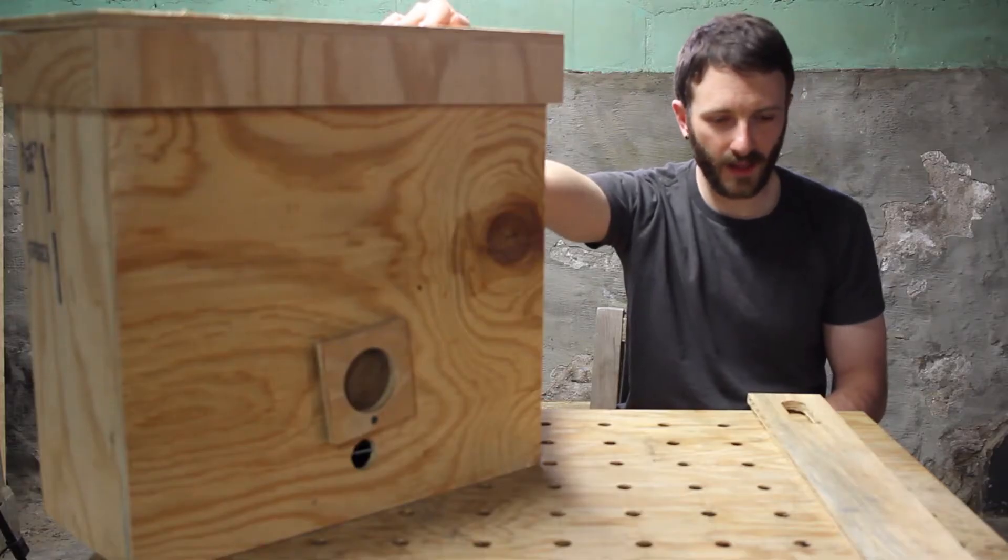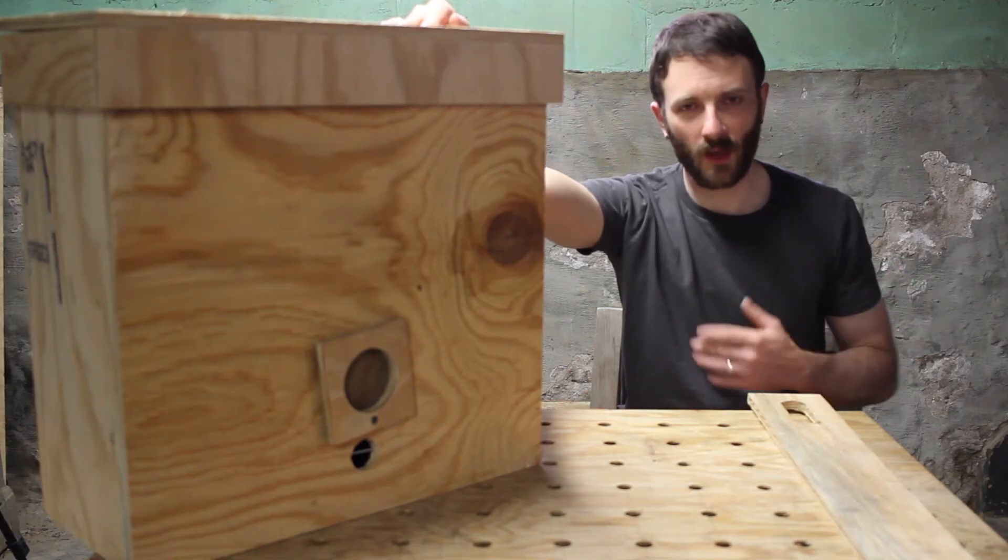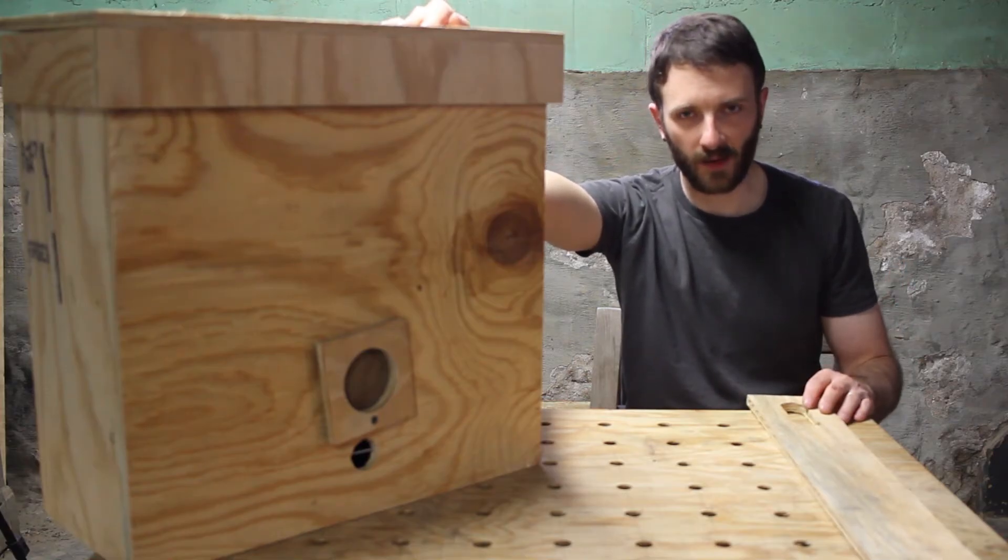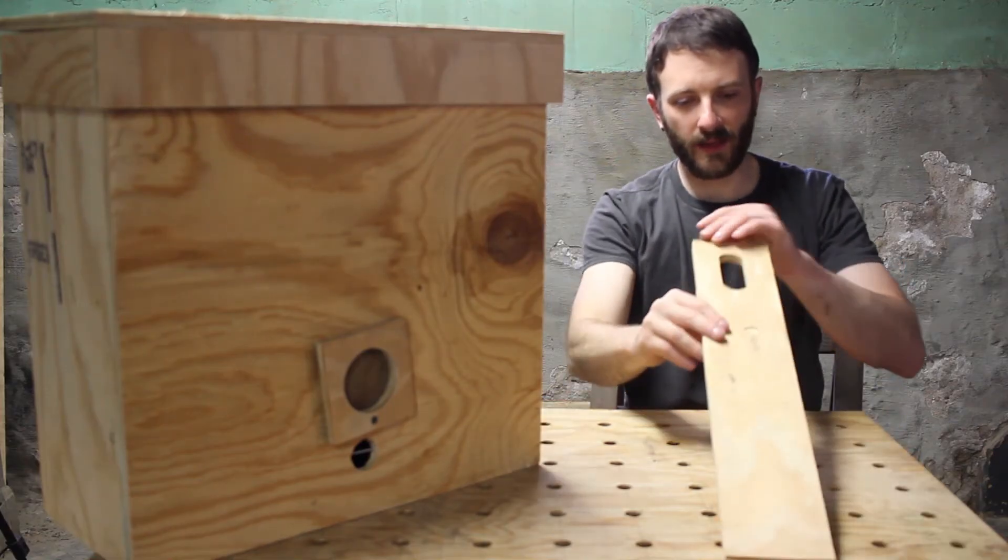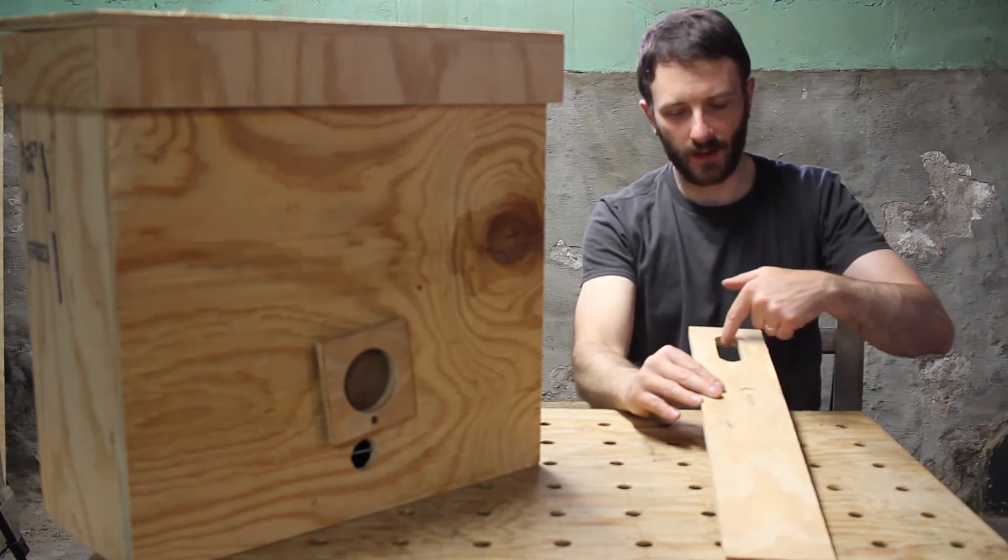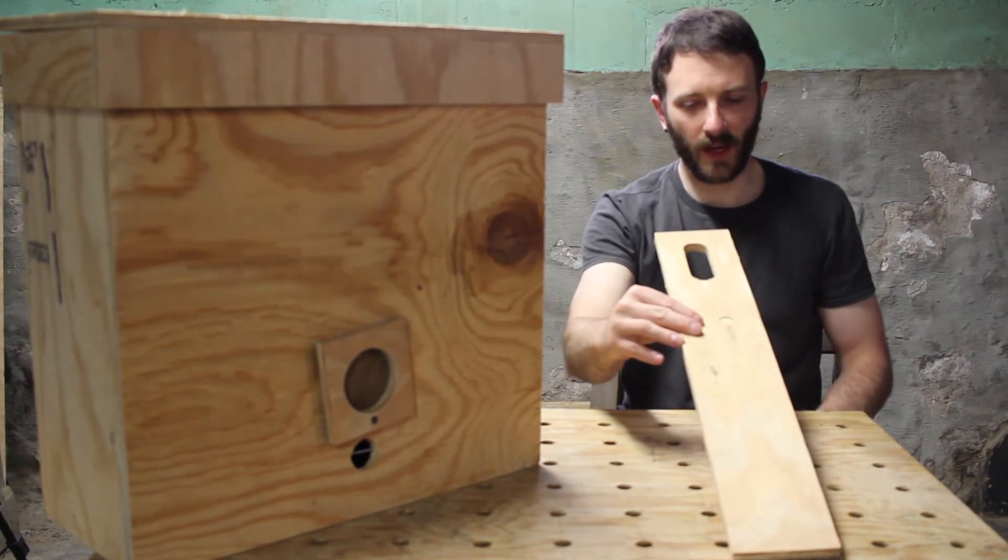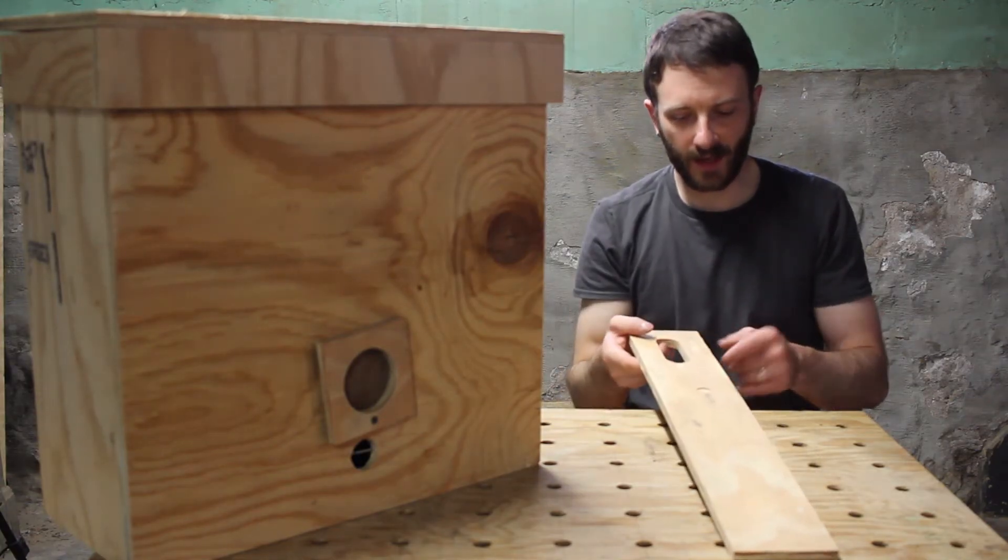So how I'm going to be hanging these is one's going to go on my back porch, so I'm not going to use a hanging bracket for that. I just made this strip of plywood here and drilled a couple holes, then cut it out with my jigsaw.